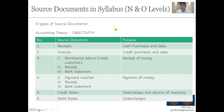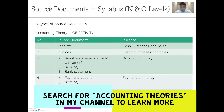There are six types of source documents you need to know for your syllabus: receipts, invoices, remittance advice, bank statements, payment vouchers, and credit and debit notes. Before I go through them one by one, you need to remember that source documents support one of the accounting principles — objectivity. Objectivity tells you that you can't just record a transaction on a whim; those transactions must be backed by objective source documents that can be verified, like receipts and invoices.